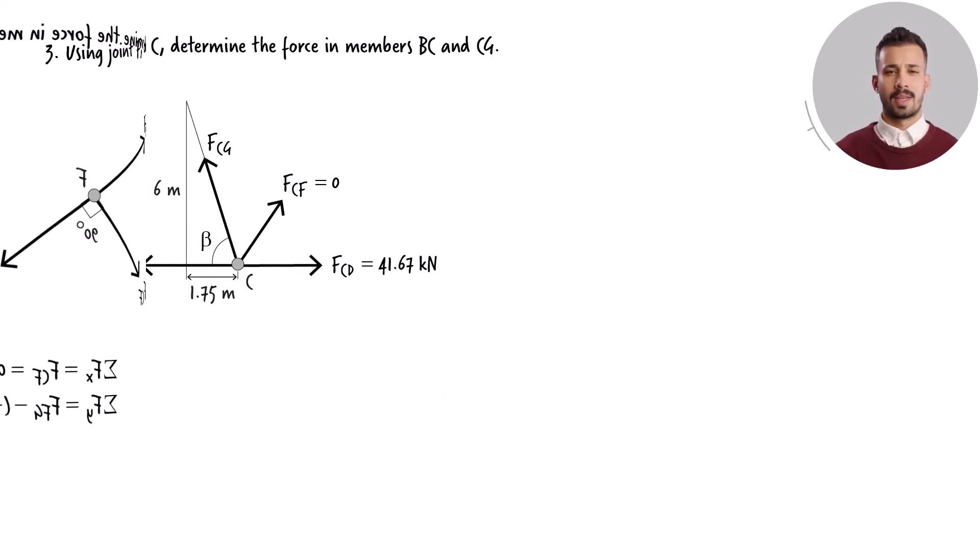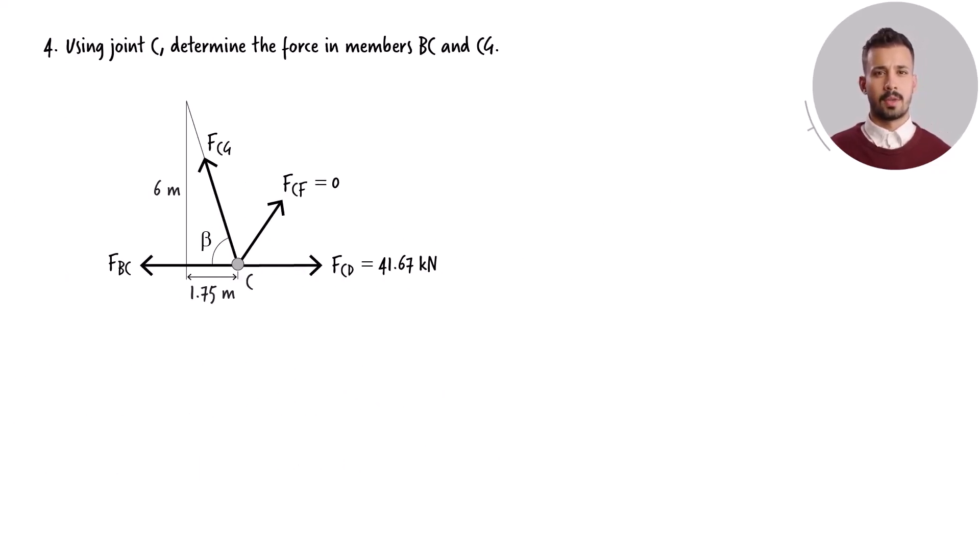Next, we examine joint C. As you can see, four member forces are acting at this joint, but only two of them are unknown.